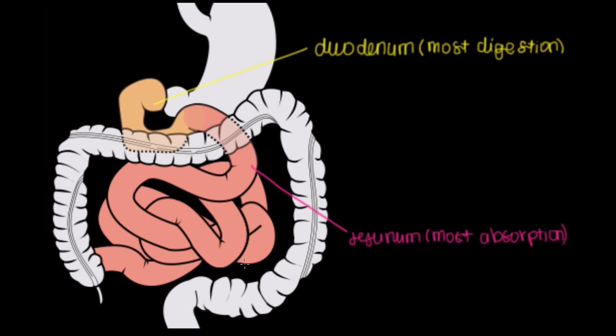Then finally after your food passes through the jejunum, it gets to the last part of the small intestine and that's called the ileum. And the ileum, now this doesn't have a superlative like the most digestion or the most absorption, but there are some pretty important things that are absorbed here.